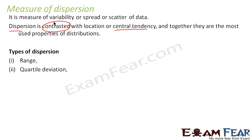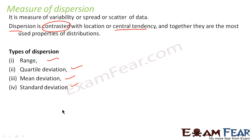The types of dispersion are: range, quartile deviation, mean deviation, and standard deviation. To repeat — measure of dispersion is the measure of variability or spread or scatterness of data. It contrasts with central tendency, but combining both gives a better idea about the data and allows us to interpret it in a better way.